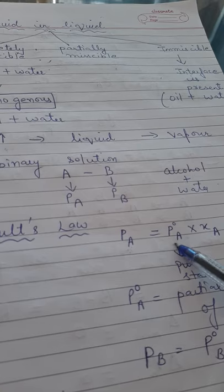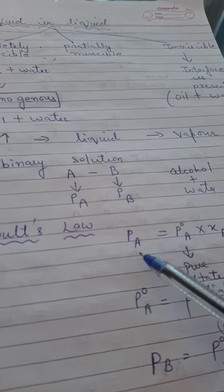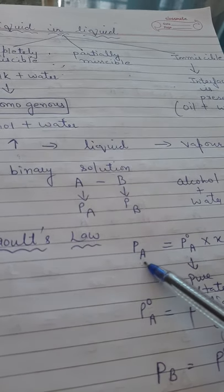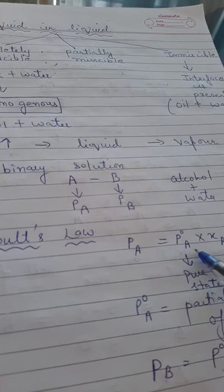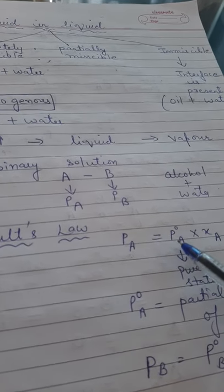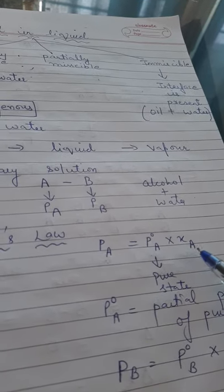P0A is the pressure in pure state. If I talk about pure state, then P0A. And what is PA? The pressure exerted by A component. So PA, the pressure exerted by A, is equal to the pressure exerted in pure state, partial pressure P0A, into XA. What is XA? Mole fraction of component A. Partial pressure of pure component is P0A.